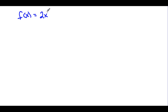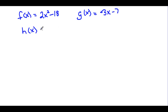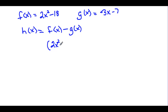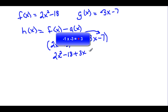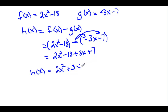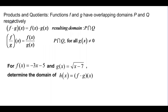We never did a subtraction, so let's take those first two functions. We want h of x to equal f of x minus g of x. So f of x is 2x squared minus 18, and then minus g of x, which is negative 3x minus 7. We distribute the negative, giving us 2x squared minus 18, but then plus 3x and plus 7. So h of x simplified is 2x squared plus 3x minus 11.